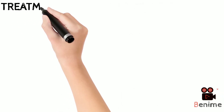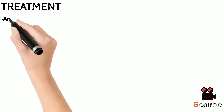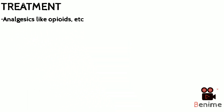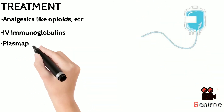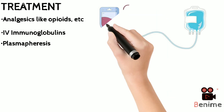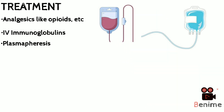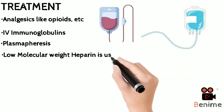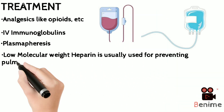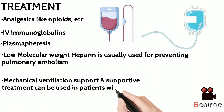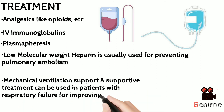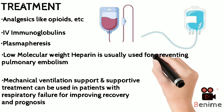First-line treatment of GBS involves relieving the symptoms, so analgesics like opioids can be given. IV immunoglobulins and plasmapheresis can be given to suppress the overactive immune response. Low molecular weight heparin can be used for preventing pulmonary embolism, and supportive care can be given to patients with respiratory failure to improve recovery.